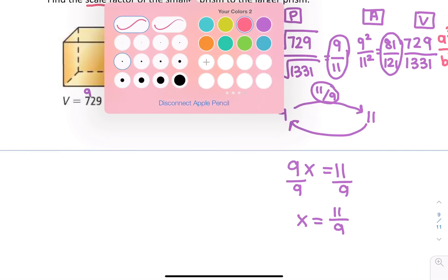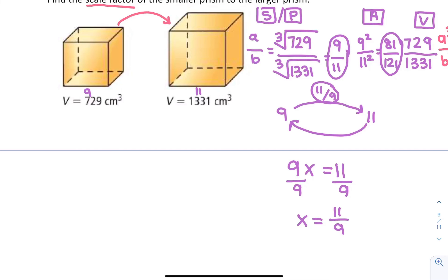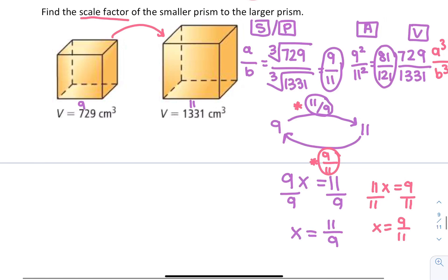If instead we wanted to go backwards, we'd say 11 times what gives me 9. I'd divide both sides by 11 and I'd get x equals 9 over 11. You can figure out your scale factor going either way. But in this case, they wanted from the smaller to the larger. So our scale factor is 11 over 9.